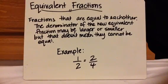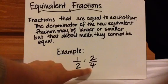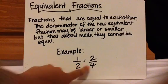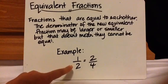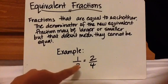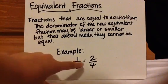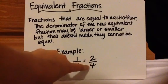So let's begin talking about equivalent fractions. Equivalent fractions are fractions that are equal to each other. Now there's something I want to clarify before I keep going. A lot of students think that because the numbers are larger, that means the fraction is much bigger. And that's not always the case. The denominator of the new equivalent fraction may be larger or smaller, but that doesn't mean they cannot be equal. So here's an example: one half is equal to two fourths. Notice that this number is larger than this number. And that's okay. That's the whole point of equivalent fractions. You're just saying, well, instead of two pieces, now I have four pieces. So what would the equivalent fraction be if I had four pieces? Well, if you have half here, then you would have two fourths here to make that equal.